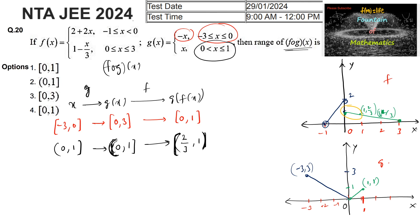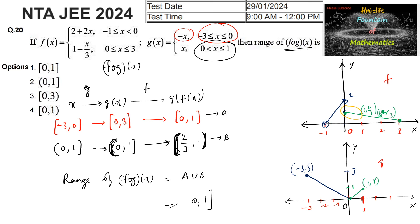Since 0 is excluded we can write the closed interval 2 by 3 comma 1. To get the range of f circle g of x, we take the union of these two sets. Set A union set B is nothing but 0 to 1. So the range is 0 to 1, which is option A — so option A is the answer.